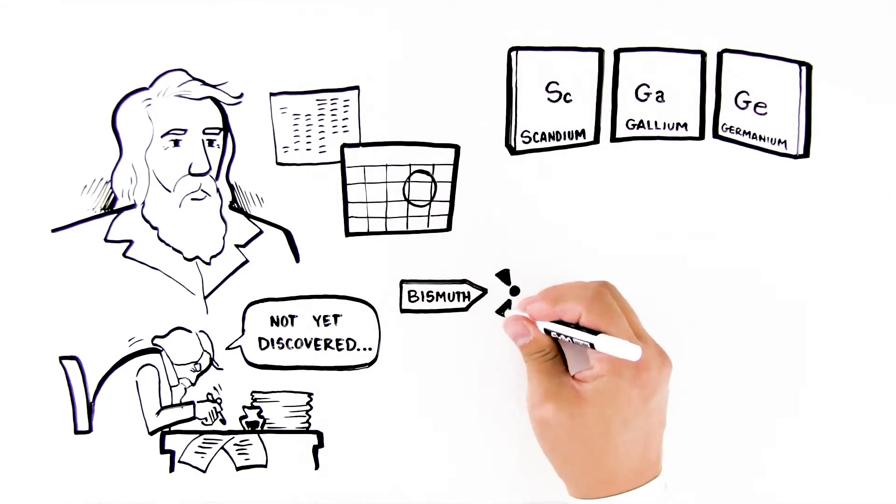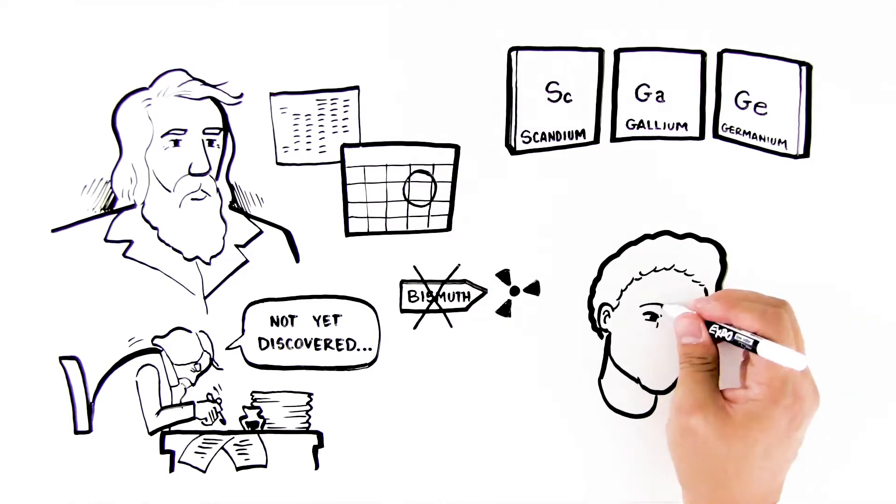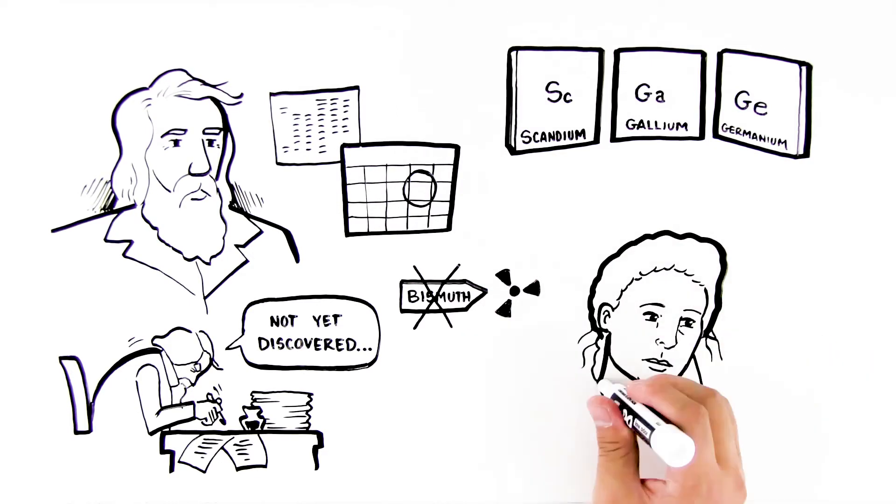Further elements, which beyond bismuth are all unstable and radioactive, were discovered by pioneering chemists like Marie Curie and likewise placed in the periodic table.